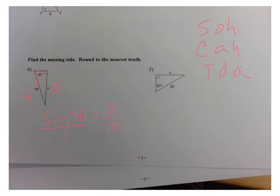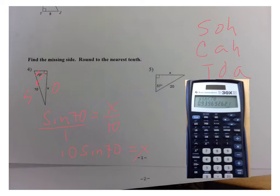I can treat that as a proportion and do cross-products: 10 times the sine of 70 equals X times 1. I grab my calculator — on these little blue calculators, I pressed the sine button, typed in 70, hit equals, and it gave me that decimal. Then I multiply that by 10. Since multiplying by 10 just moves the decimal point one place, that becomes 9.4. So that missing side is 9.4 long.